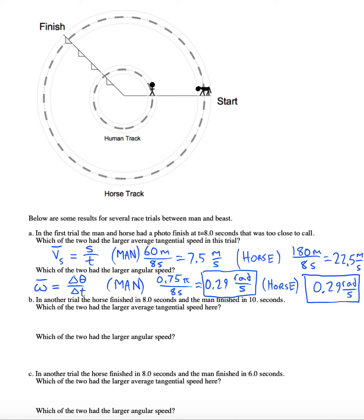In another trial, let's say the horse finished in eight seconds but the man took ten seconds to get to the finish line. Which of the two had the larger tangential speed here? Well just to be sure, we can recalculate the man's speed. It would now be 60 over 10, so he slowed up to six meters per second. But the horse still ran 22.5 meters per second, so clearly the horse was faster.